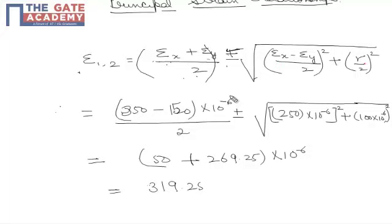The only difference from the stress transformation equation is that there we use shear stress squared, but here we use half of shear strain squared. Since we're finding principal strains, we use gamma by 2.